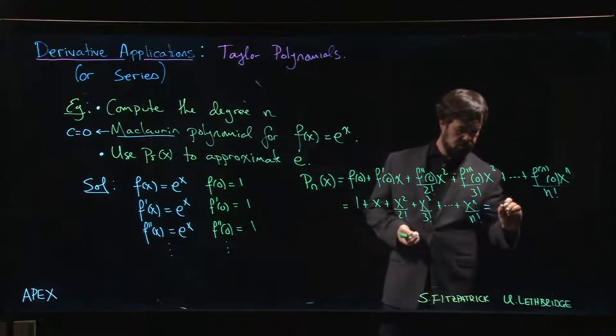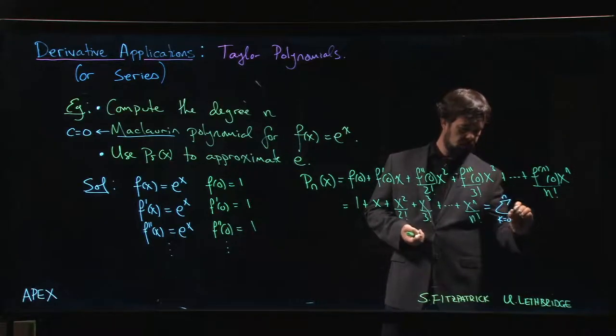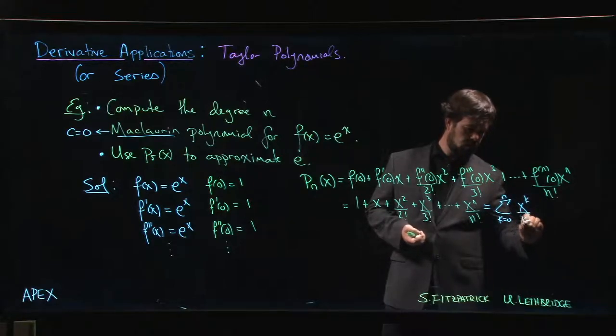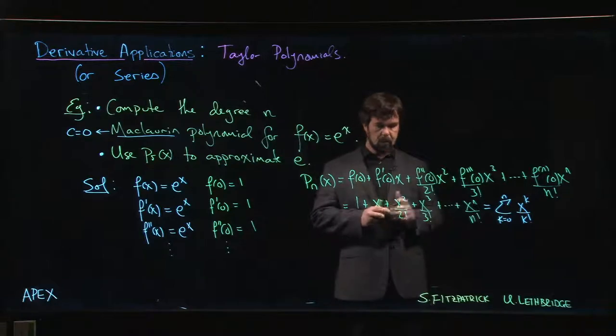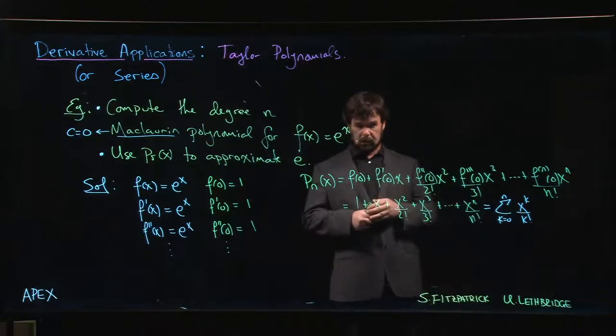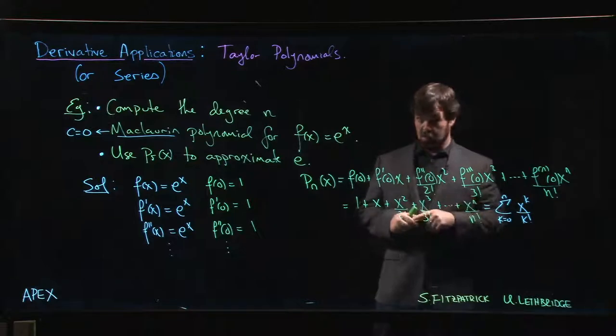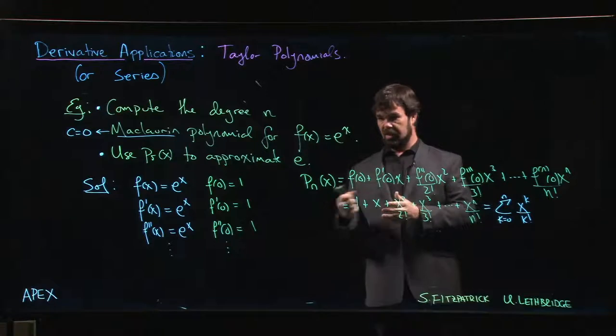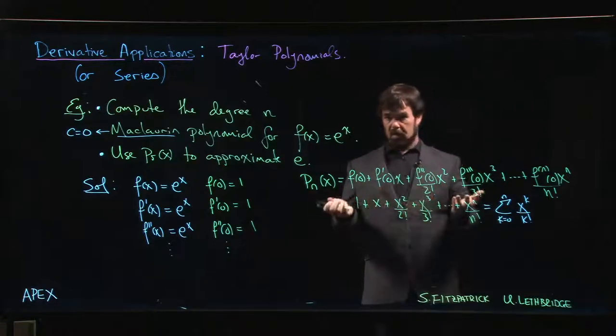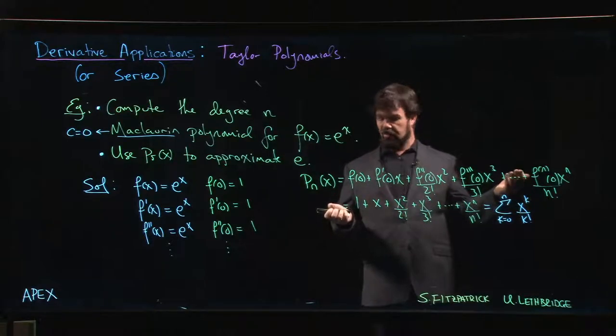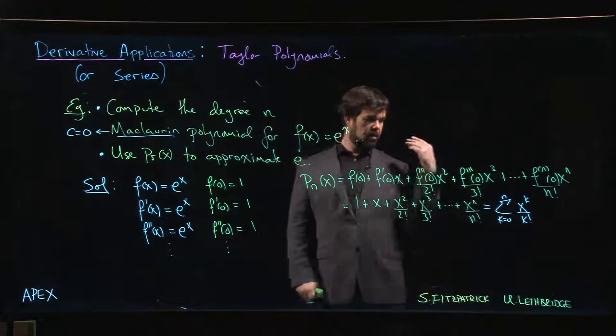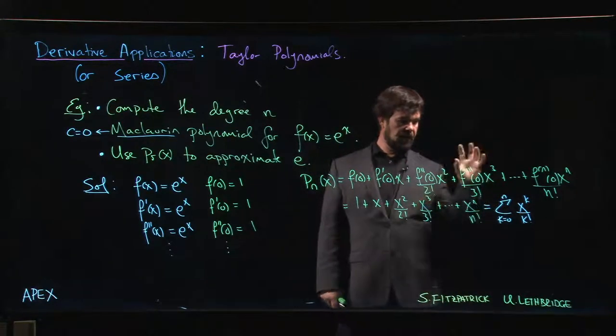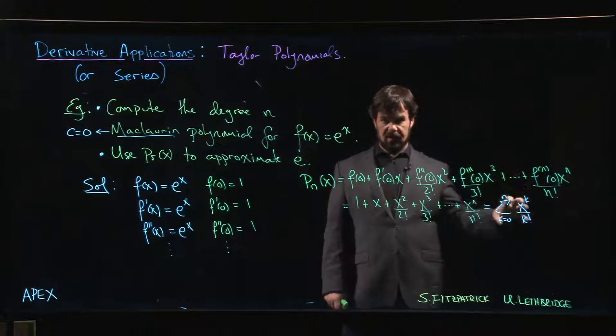If you want, you can use summation notation and write this as the sum from k=0 to n of x to the k over k factorial. Those of you who are looking at sequences and series, let n go to infinity here and what you will have is actually a series representation for the exponential function. Replace that n by infinity and this is e to the x, exactly equal to e to the x.